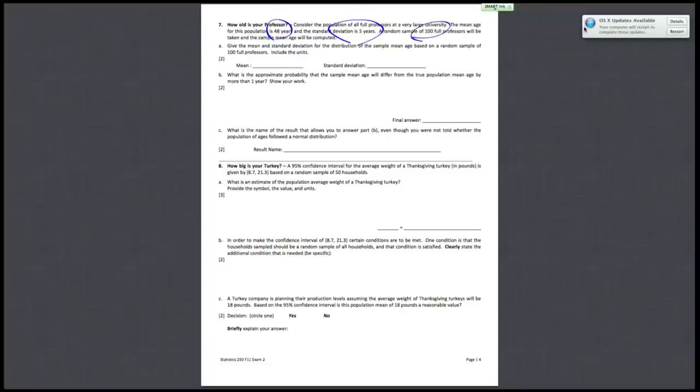For this question, you need to recognize that the central limit theorem is what they're really asking for. Central limit theorem goes something like this: X bar follows a normal distribution with mean of mu and a standard deviation of sigma over square root of n. So for the mean, that's just 48 years. And the standard deviation is going to be your sigma over the square root of n. So sigma is five, and n is 100. This evaluates to 0.5 years. Your final answer will be 48 years for the mean and 0.5 years for the standard deviation.